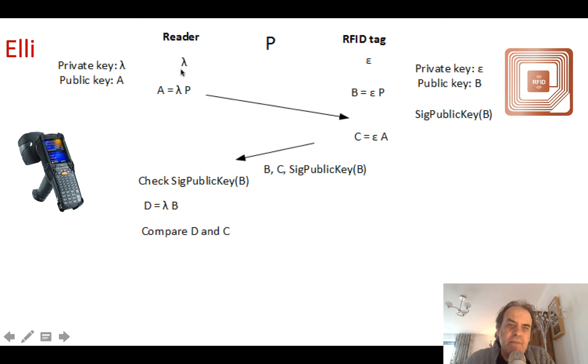The reader generates lambda and then calculates, takes the point P which is shared, multiplies it by this large number lambda, and we get a value of A. A then gets sent over to the RFID tag, and now what it must do is multiply the value of A by epsilon to give the value of C.